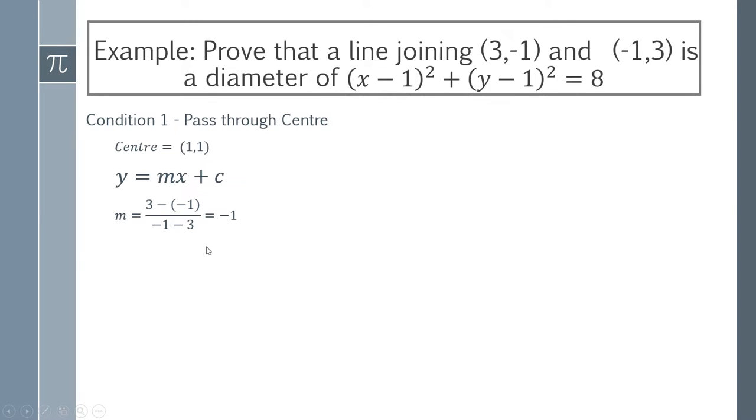So what you now need to do is substitute that m into that equation. So we get the equation y = -x + c. We don't know what the value of c is so we need to substitute one of these points in and rearrange to get a value of c. I'm going to choose this point here. So we've got a y value of 3 and an x value of -1. I can substitute that in here replacing y with 3 and replacing x with -1.